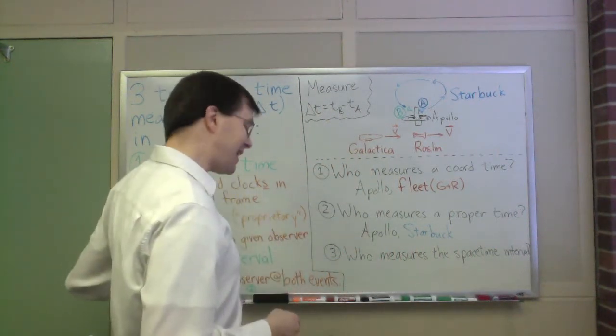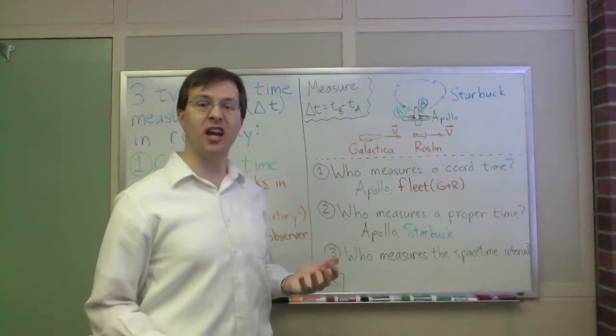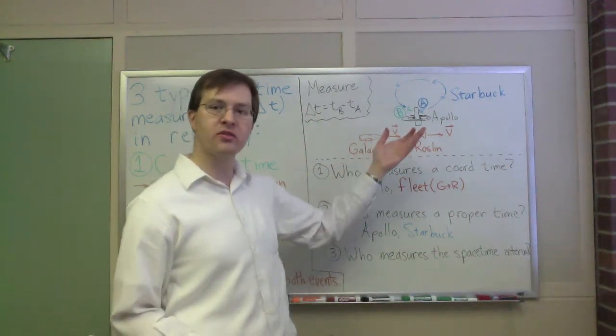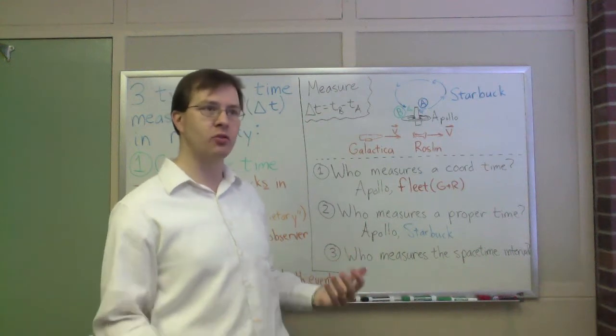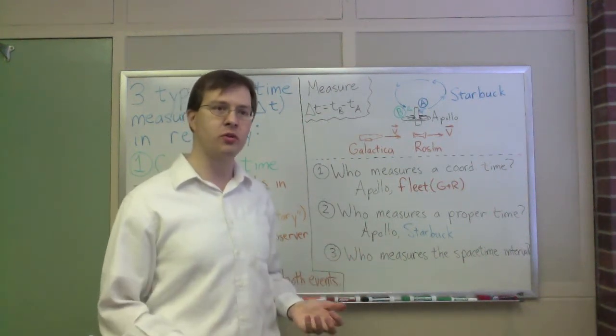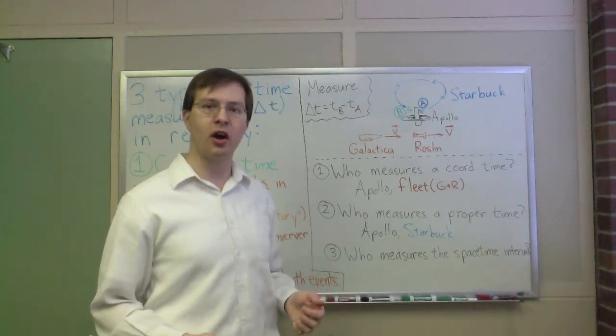Again, I expect that those two proper times will be different numbers. You will get different measurements for the two, because the motion of Apollo and the motion of Starbuck are not the same. They're not in the same inertial reference frame, they follow different paths between those two. Proper times from different observers are generally different.